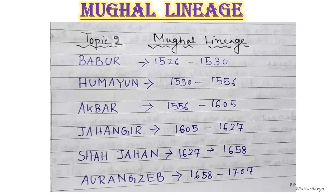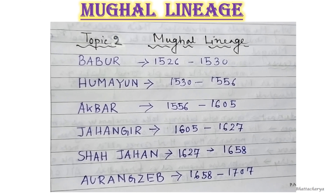The Mughal lineage: Babur was the founder of the Mughal Empire, with a time period of 1526 to 1530. Then Humayun, 1530 to 1556. Akbar was the most famous emperor, 1556 to 1605. Then Jahangir, 1605 to 1627. Shah Jahan, 1627 to 1658. And Aurangzeb, 1658 to 1707. After Aurangzeb there were many more rulers of the Mughal Empire, but they were not as powerful.